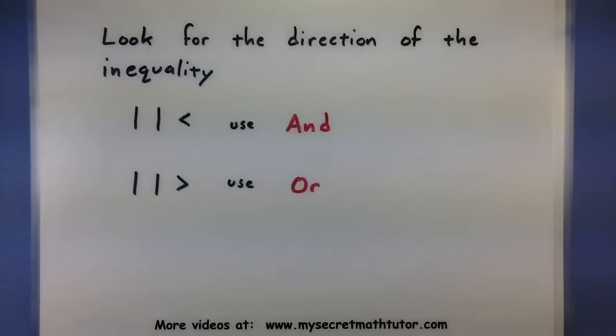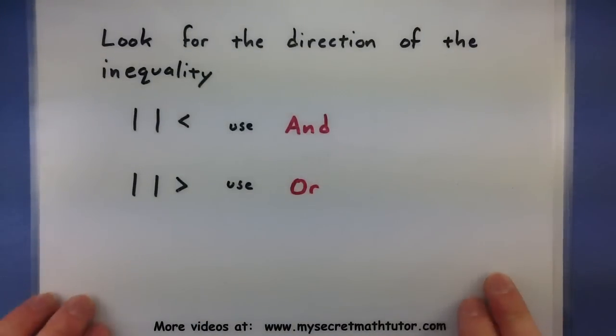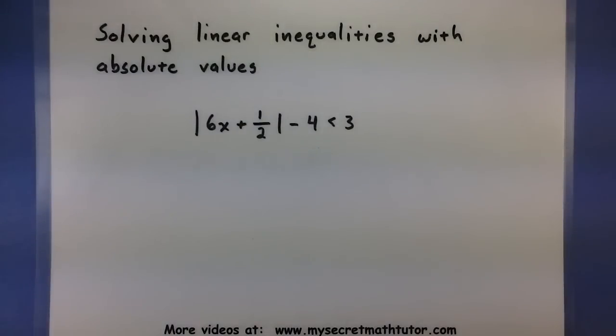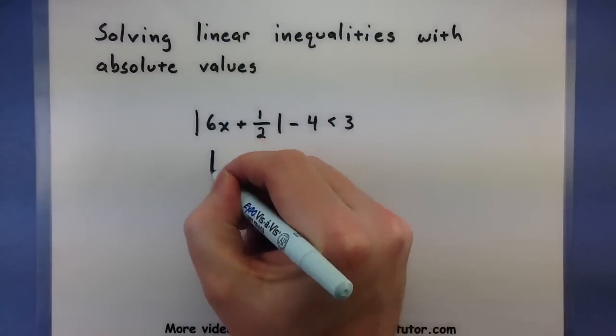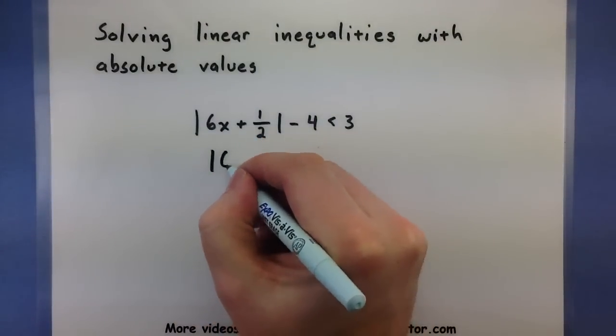You'll see where this plays a part as we get into the examples. Let's give this a try. So in my first one, I have the absolute value of 6x plus 1 half, then I have a minus 4 less than 3. Let's work on getting those absolute values isolated on one side. We'll do this by adding a 4 to both sides.